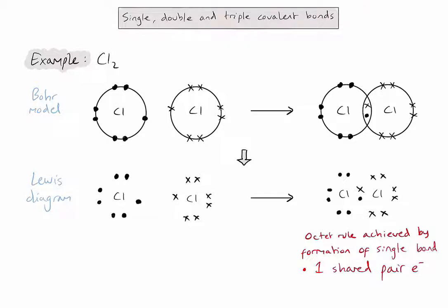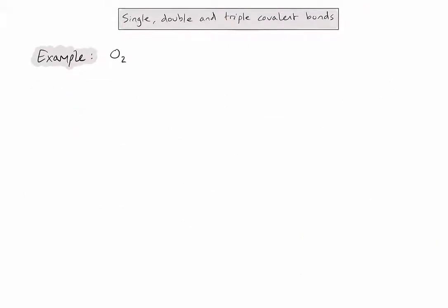Let's now look at a second example. In this example we'll look at how an oxygen molecule, O2, is formed from two oxygen atoms. Let's again start with a simple Bohr model of my atoms. Because oxygen is in group 16, you'll notice it only has six valence electrons.